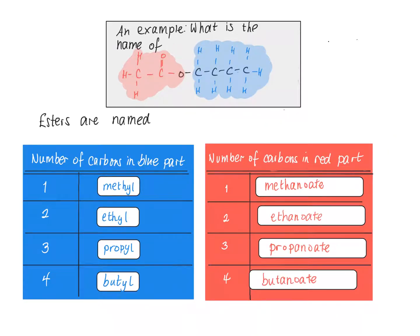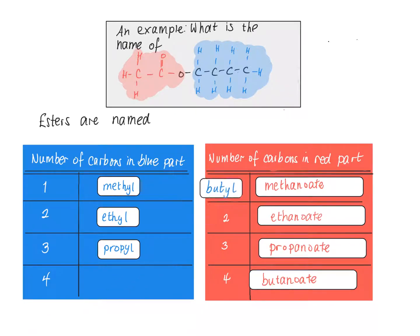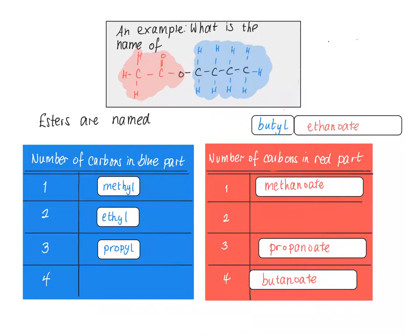If we look at this ester, the blue bit from the alcohol has got one, two, three, four carbons in. When you've got four carbons on the blue bit from the alcohol, it's called butyl. So it starts with butyl. The bit from the carboxylic acid has got one, two carbons in, and when there are two carbons, it's called ethanoate. So this ester is called butyl ethanoate.